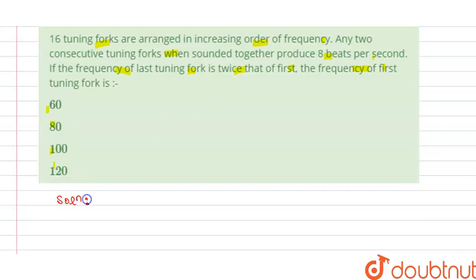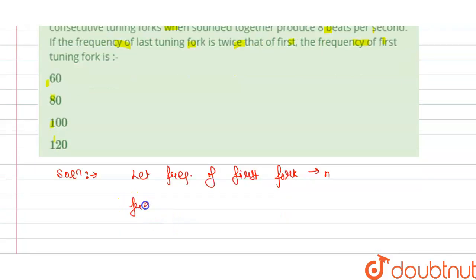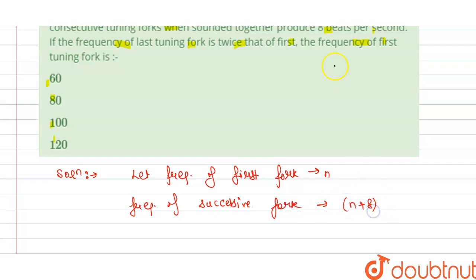The solution: let the frequency of the first fork be n. The frequency of each successive fork will be n, n+8, n+16, and so on, since consecutive forks produce 8 beats per second. The last fork is twice the first, so the last frequency is 2n.